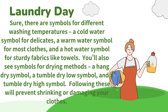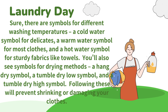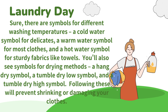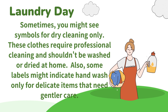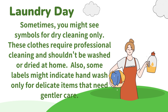Sure. There are symbols for different washing temperatures. A cold water symbol for delicates, a warm water symbol for most clothes, and a hot water symbol for sturdy fabrics like towels. You'll also see symbols for drying methods: a hang dry symbol, a tumble dry low symbol, and a tumble dry high symbol. Following these will prevent shrinking or damaging your clothes. That's really helpful. Anything else surprising on these labels? Sometimes you might see symbols for dry cleaning only. These clothes require professional cleaning and shouldn't be washed or dried at home. Also, some labels might indicate hand wash only for delicate items that need gentler care.